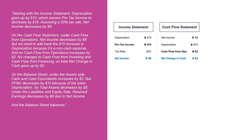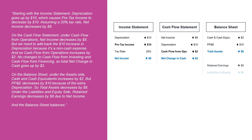On the balance sheet, under the assets side, cash and cash equivalents increases by two, but PP&E decreases by ten because of the extra depreciation, so total assets decreases by eight. Under the liabilities and equity side, retained earnings decreases by eight due to net income, and the balance sheet balances. That's how you should answer this question.